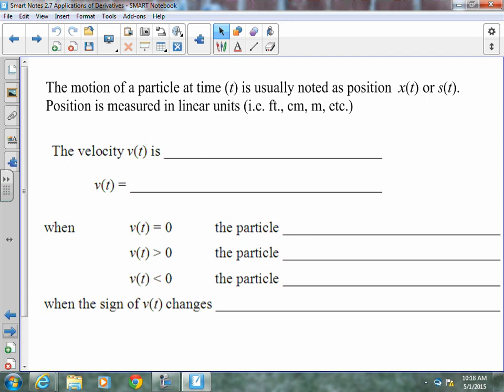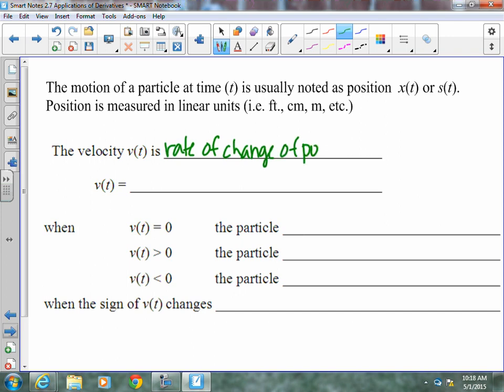The velocity v(t) is rate of change of position with respect to time. How it's changing over time. We have already done a little bit with derivatives. We know that derivatives are a rate of change. So v(t) is actually the derivative of position, whichever way you write it.